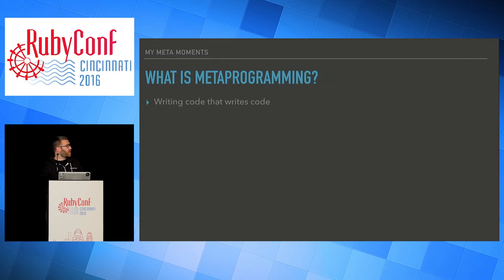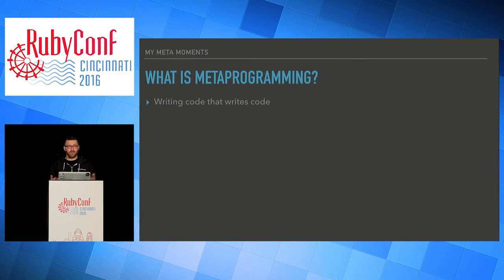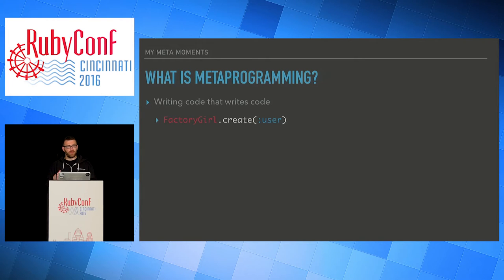The first way I view metaprogramming is writing code that writes code. This is sort of a lazy definition, but the idea is that you can write code in such a way that new behavior can be added at runtime or compile time. For example, if you've ever used Factory Girl for creating objects in testing, when you have different parameters, those are actually methods that you end up getting called using some of the metaprogramming tools available to you.